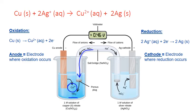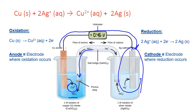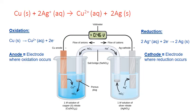The electrons produced are drawn towards the electrode in the right-hand half cell. This electrode is known as the cathode, and this is where the reduction half reaction occurs. In this setup, a piece of silver metal is our cathode. Silver ions present in the solution in the right-hand beaker gain electrons from the cathode and end up forming more solid silver that deposits on the surface of the metal. The loss of positively charged ions in this half cell draws in more positively charged sodium from the salt bridge to replace them.